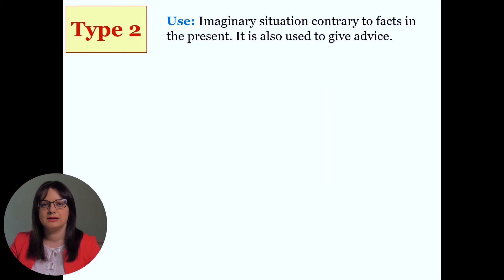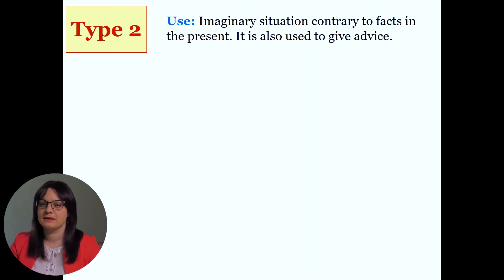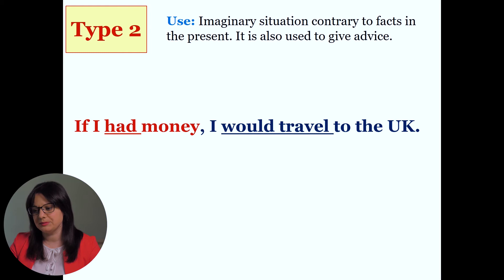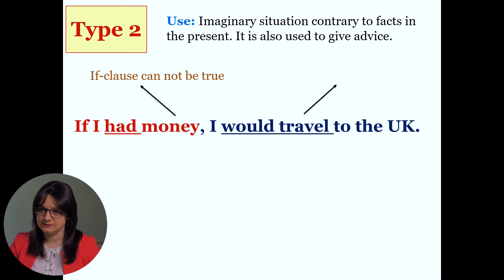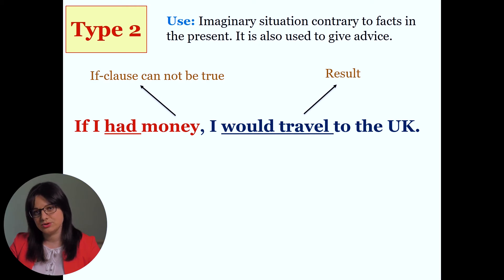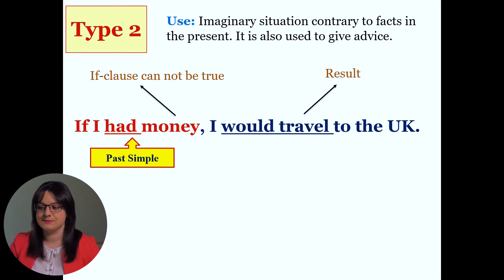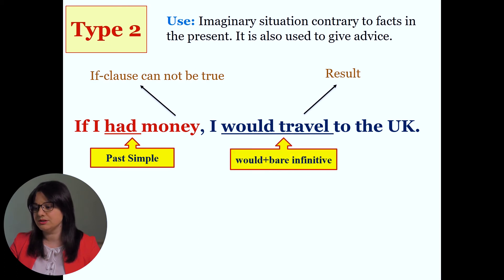Type 2 expresses an imaginary situation, contrary to facts in the present. It is also used to give advice. Look at this example: 'If I had money, I would travel to the UK.' 'If I had money' cannot be true, because I don't have money. 'I would travel to the UK' is the result — this is an imaginary situation. If I had this money, for sure I would travel to the UK, but I don't have it. In the IF clause, we use past simple tense. In the main clause, we use the structure: would plus bare infinitive.